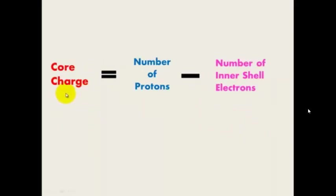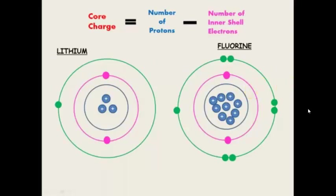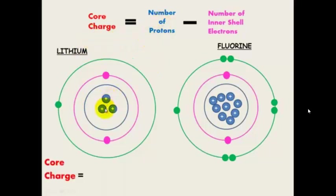We can work this out with something called core charge. Core charge equals the number of protons minus the number of inner shell electrons. Inner shell electrons are any electrons that are not our outer shell or valence shell electrons. To work out the core charge of lithium: 3 protons minus 2 inner shell electrons gives a core charge of 1 for lithium.